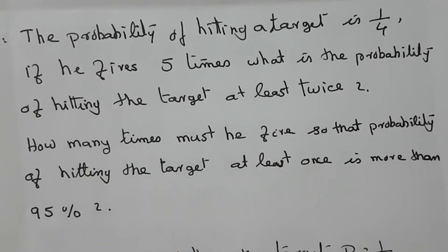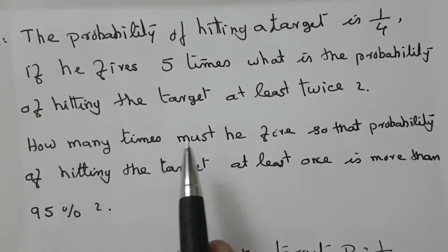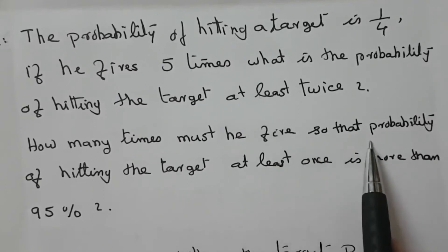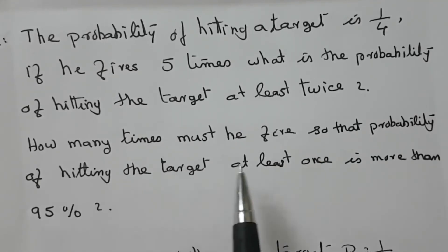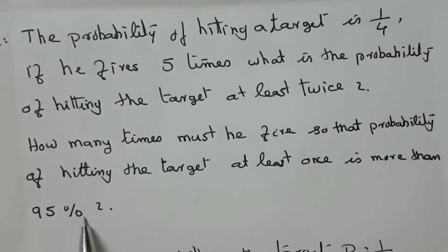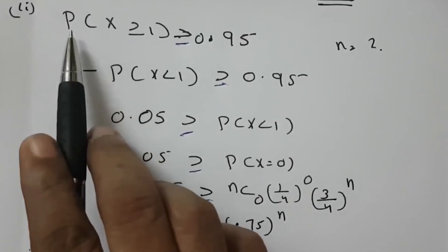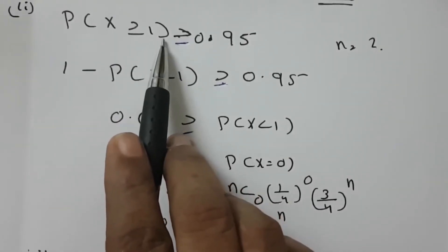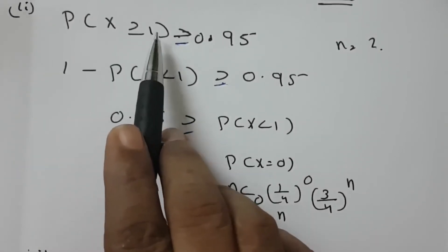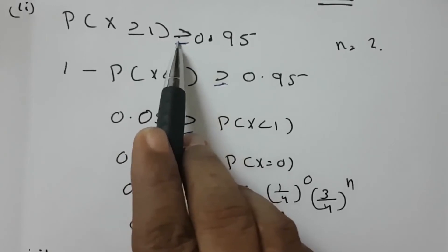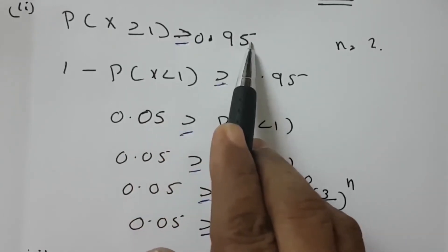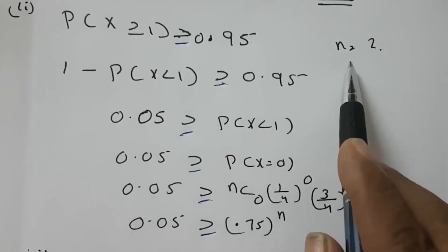For the second part: how many times must he fire so that the probability of hitting the target at least once is more than 95%? This means P(X ≥ 1) > 0.95. We want to calculate the value of n — the number of trials needed.